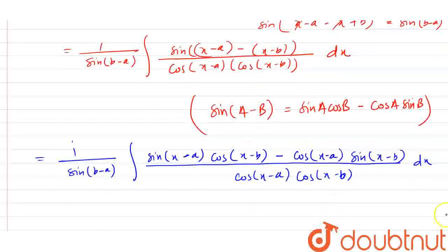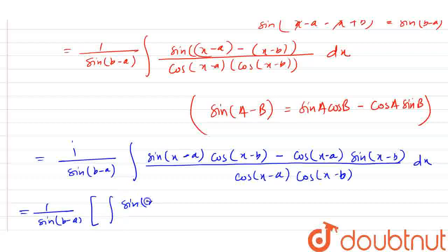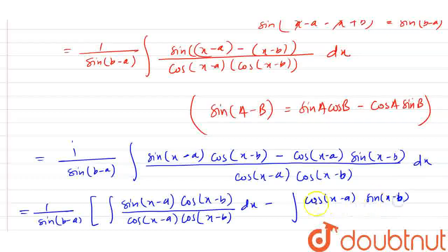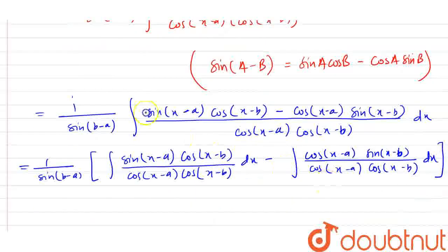We split the terms. The integration becomes 1 divided by sin(b minus a), times the bracket of: integration of sin(x minus a) into cos(x minus b) divided by cos(x minus a) into cos(x minus b) dx, minus integration of cos(x minus a) into sin(x minus b) divided by cos(x minus a) into cos(x minus b) dx. The cos(x minus b) terms cancel each other, and the cos(x minus a) terms cancel each other.